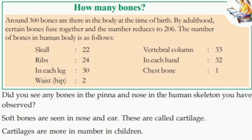The number of bones in the human body: the skull has 22 bones, the ribs have 24 bones, each leg has 32 bones, the vertebral column has 33 bones, and the chest bone is one bone.